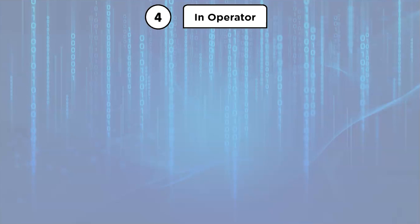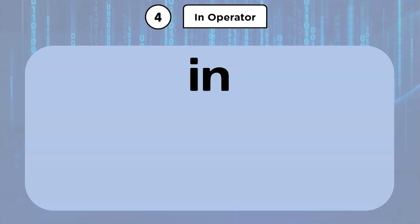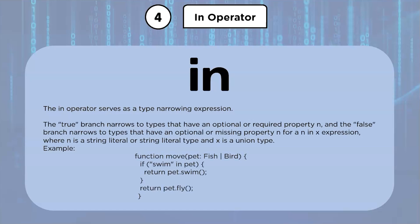Next, we look at the in operator. The in operator serves as a type narrowing expression. The true branch narrows to types that have an optional or required property N, and the false branch narrows to types that have an optional or missing property N, for an N in X expression where N is a string literal or string literal type and X is the union type.